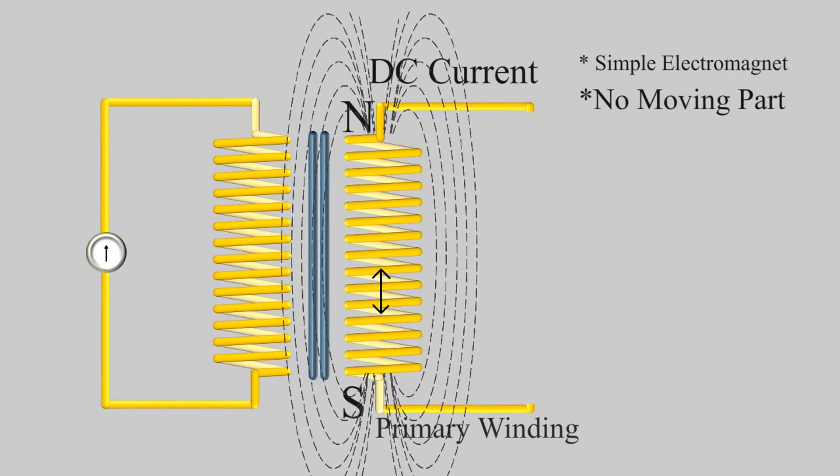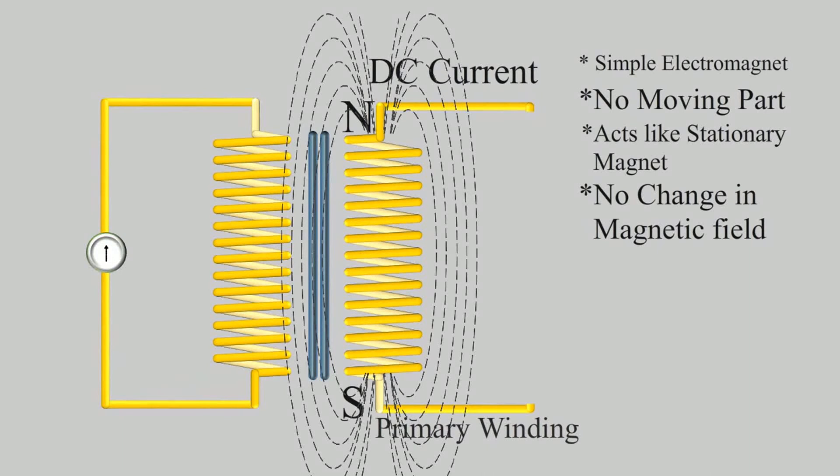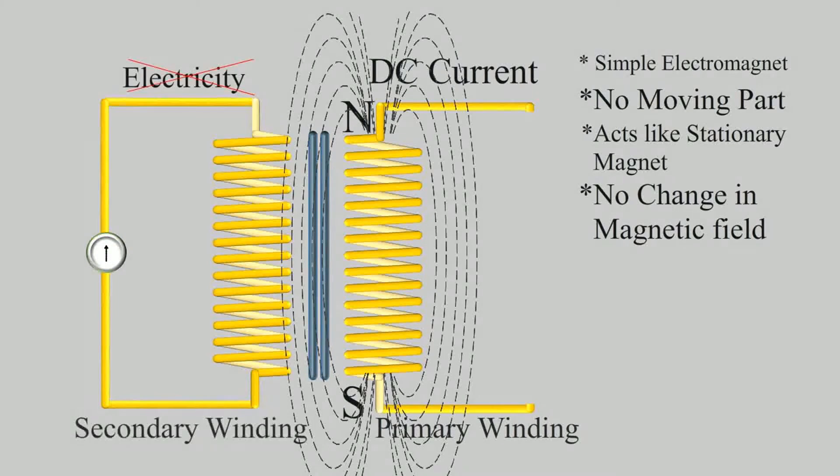But as there are no moving parts in transformers to move the magnet side by side as we did in experiment, it can only act like a simple stationary magnet. Hence there is no change in magnetic field over time meaning no electricity flow in secondary winding.